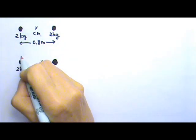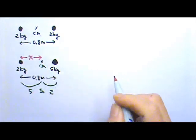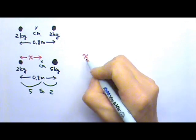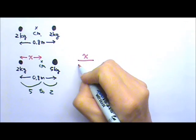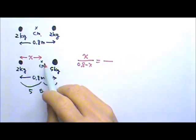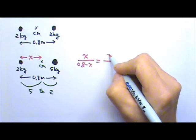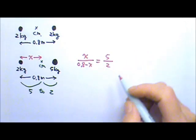So if I let the distance between the 2-kilogram and the center of mass be x, then the distance x to this will be 0.8-x. x to 0.8-x should equal to 5 to 2, and then we can cross-multiply and solve for x.